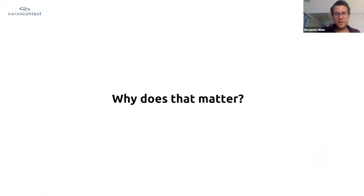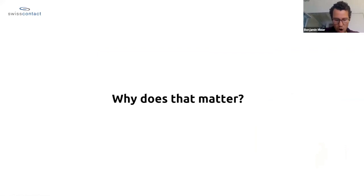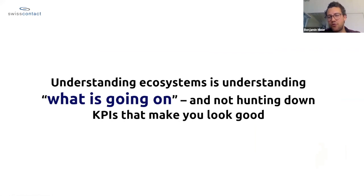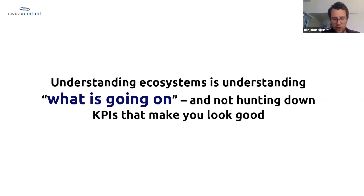Why does this matter? Because it frames how we look at ecosystems. There's a fundamental difference between measuring an ecosystem — meaning measuring the output — versus really wanting to understand what is happening in the ecosystem and how we can better design interventions and allocate necessary resources to overall improve it. When we talk about understanding ecosystems, it's really about asking: what is going on? Are we on the right track? Do we have the vibrancy we really need? Do we have this exchange of information? Or are we just hunting down KPIs that make us look good but don't inform us about where to target interventions?